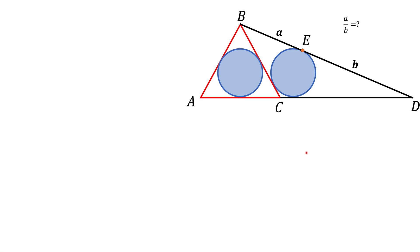Here we have two triangles sitting next to each other. Triangle ABC, the red triangle, is an equilateral triangle. And next to it we have triangle BDC. In both of these triangles we have inscribed circles of the same radius. The inscribed circle in triangle BDC is tangent to all three sides of the triangle. A point of tangency between the circle and side BD is point E. We are told that BE is A, ED is B, and we are asked to find the ratio A over B.